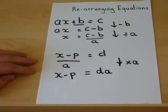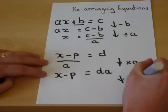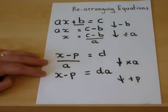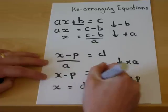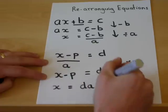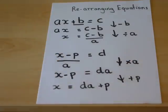And then to finish off, I have an x take away a p. So I must add a p. Inverse functions, x equals d times a plus p. So we have successfully rearranged two equations.